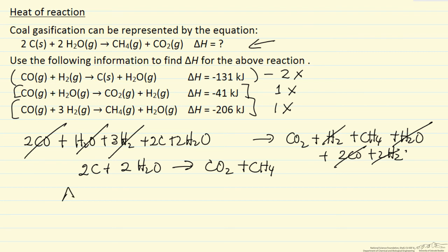So therefore delta H for our desired reaction is minus 2 times delta H for that reaction plus 1 times the minus 41 plus 1 times the minus 206. So delta H for this reaction is 15 kilojoules.